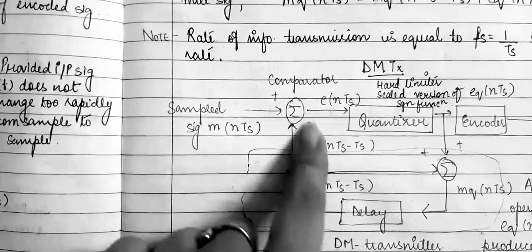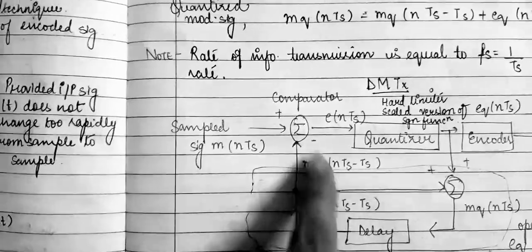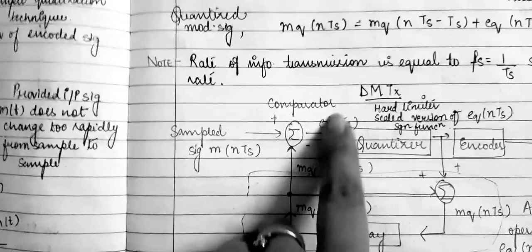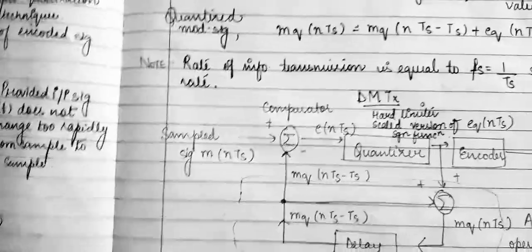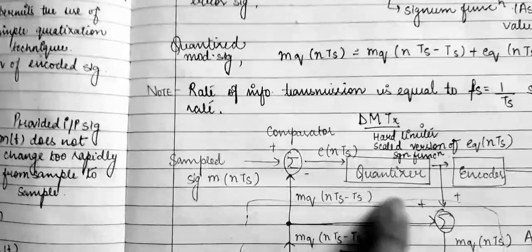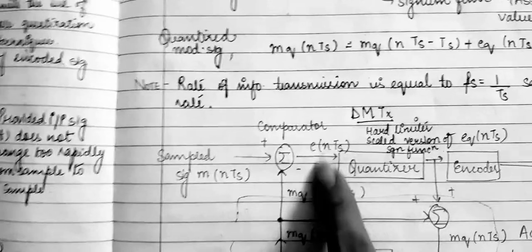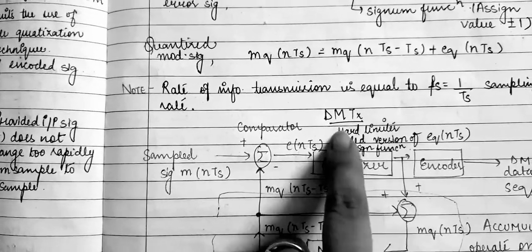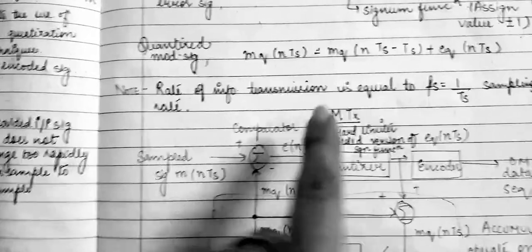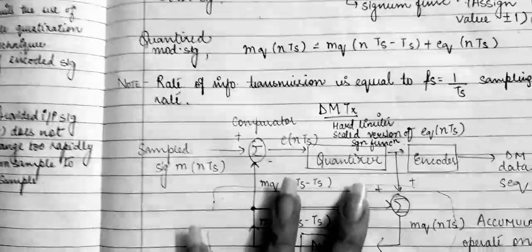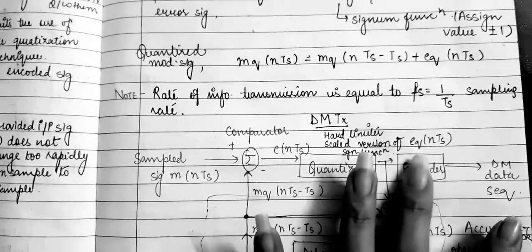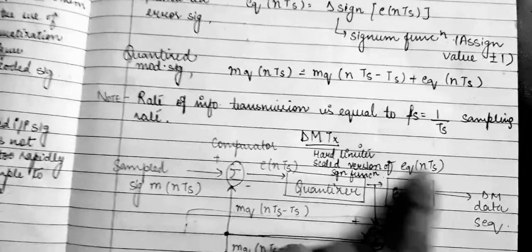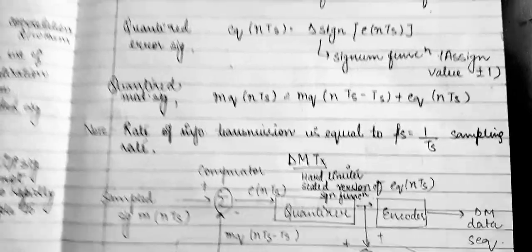The signal is transmitted through a comparator, and the output of the comparator is the error signal e(nTs). This is followed by a quantizer. The quantizer scales the version using the signum function, which acts as a hard limiter, producing the output eq(nTs).